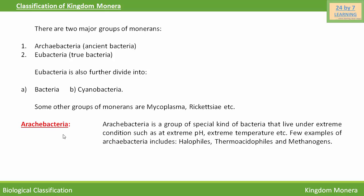Archibacteria is a group of special kinds of bacteria that live under extreme conditions, such as at extreme pH or at extreme temperature. Few examples of Archibacteria include Halophils, Thermoacidophils, and Methanogens.